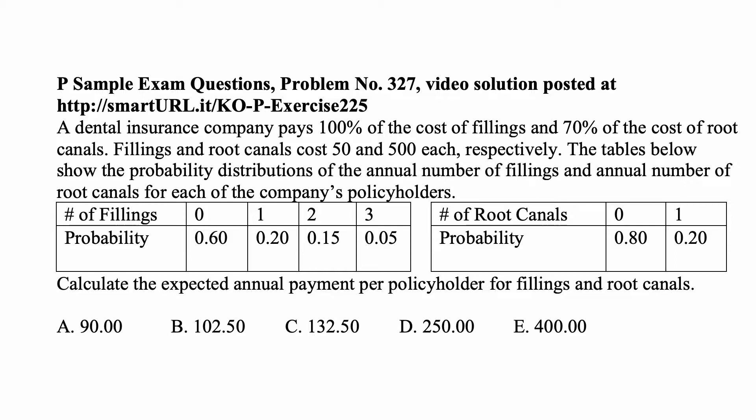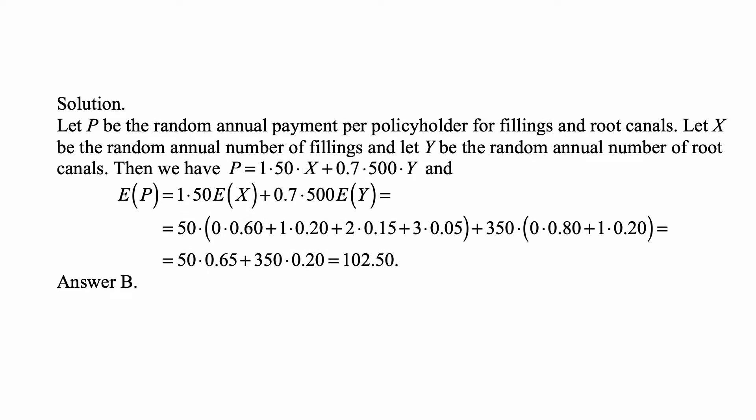The number of fillings ranges from 0 to 3 with corresponding probabilities, and the number of root canals is either 0 or 1, with corresponding probabilities. Calculate the expected annual payment per policyholder for fillings and root canals.